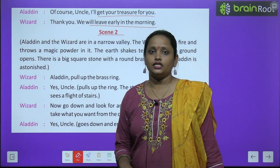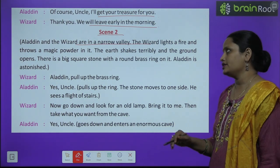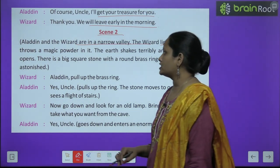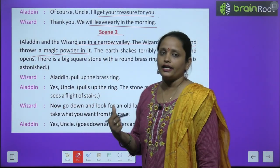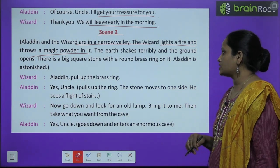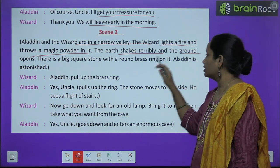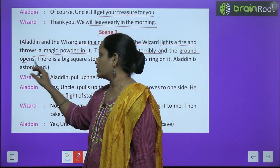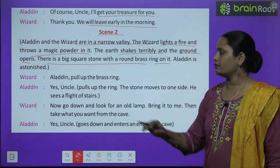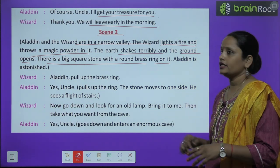Scene 2: Aladdin and the wizard are in a narrow valley. The wizard lights a fire and throws a magic powder in it. The earth shakes terribly and the ground opens. There is a big square stone with a round brass ring on it.